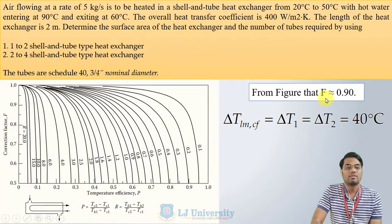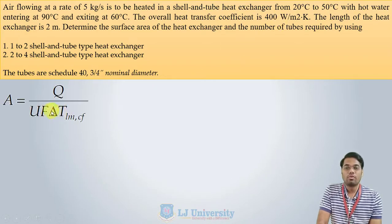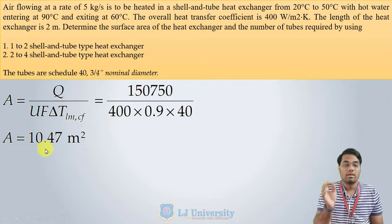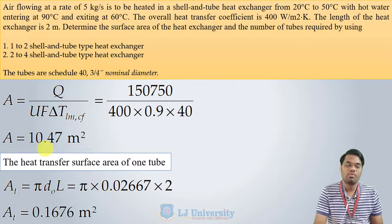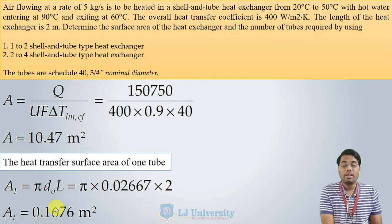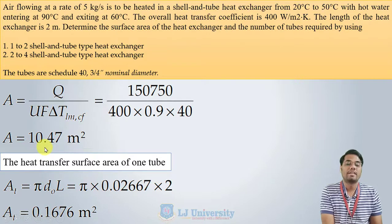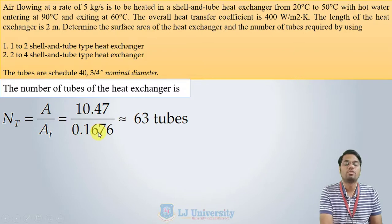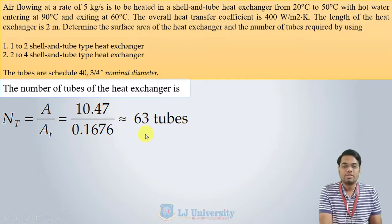With ΔT = 40°C, F = 0.9, known Q, and U = 400 W/m²K, the required area is A = 10.47 m². The heat transfer surface area for one tube is calculated as π·d·L, with diameter 0.02667 m and length 2 m, giving approximately 0.16 m² per tube. Dividing total area by area per tube: 10.47 / 0.16 = 63 tubes required.